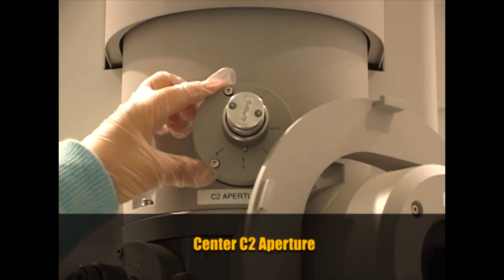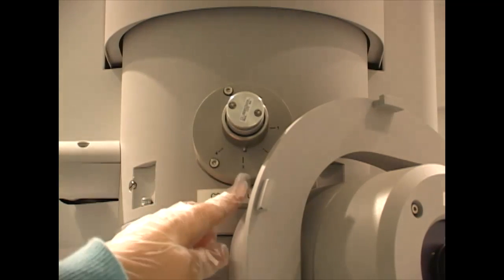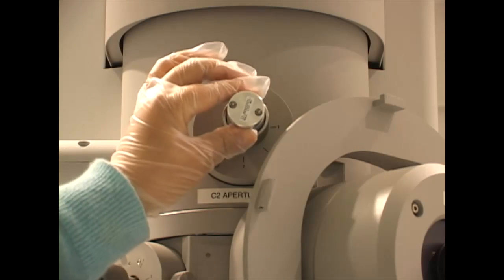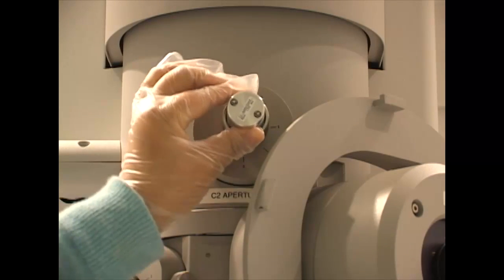Next, we must center the C2 aperture. Set the C3 aperture to position 3. Use the track ball to center the beam. Use the intensity control to condense the beam, and then spread the beam. Notice that the beam expands off-center, indicating the C2 aperture should be adjusted. Rotate the C2 dials to center the beam. One dial moves it in the X, and the other dial moves it in the Y direction. Again, condense the beam with the intensity button, and open it to confirm that the beam remains on center.